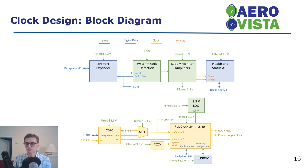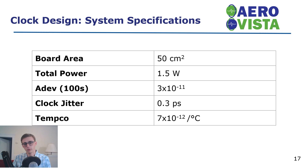We expect the clock board to have a total area of 50 cm², a total power of 1.5 watts, an Allan deviation at 100 seconds of 3×10⁻¹¹, a clock jitter of about 0.3 picoseconds, and a temperature coefficient of 7×10⁻¹² per degree Celsius.